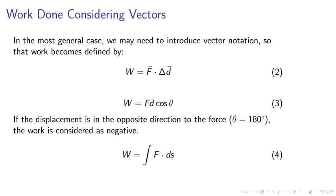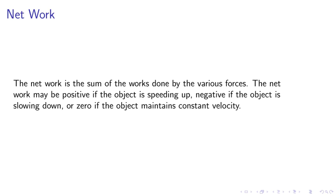We can also express work as equation four. Network. The network is the sum of the works done by the various forces. The network may be positive if the object is speeding up, negative if the object is slowing down, or zero if the object maintains constant velocity.